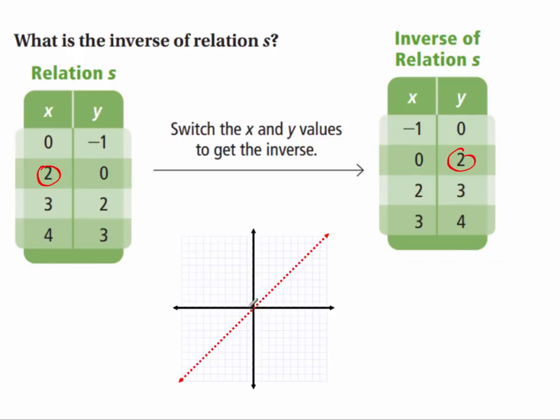Zero, negative one, so when x is zero, y is negative one. When x is two, y is zero. When x is three, y is two. And when x is four, y is three.